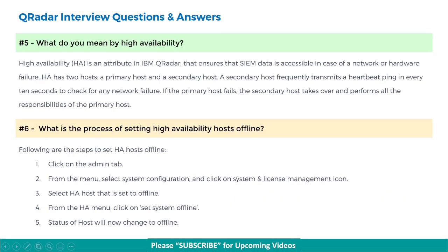Next, what do you mean by high availability? High availability is an attribute in IBM QRadar that ensures SIEM data is accessible in case of a network or hardware failure. HA has two hosts: a primary host and a secondary host. The secondary host transmits a heartbeat ping every 10 seconds to check for any network failure. If the primary host fails, the secondary host takes over and performs all the responsibilities of the primary host.